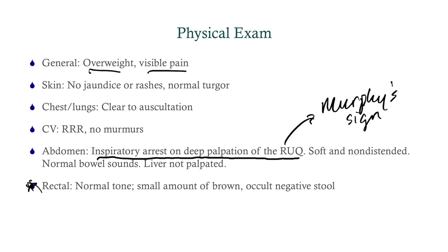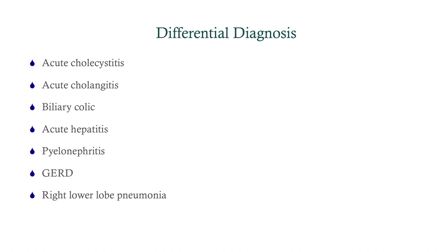On the differential, we're going to consider acute cholecystitis anytime you have a positive Murphy's sign — really anytime you've got a middle-aged woman presenting with right upper quadrant pain. Also consider acute cholangitis, biliary colic, acute hepatitis, pyelonephritis, reflux disease, and importantly, right lower lobe pneumonia, which can sometimes cause right upper quadrant abdominal pain.